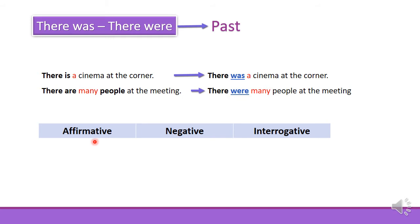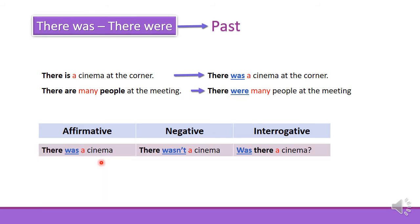Let's figure out how to form the negative and interrogative case. In the affirmative we say, there was a cinema. To turn into negative, we just add the negative particle, not. And to form a question, we just change the order — was there a cinema?